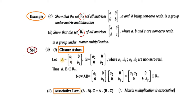So, closure property humnye check kerna hai. Matrix A aur B hamare paas R2 ke dono members hai, aur diagonal ke A1, B1, A2, B2, yeh saare elements non-zero hai. Dono ka product: if we simply find the value of A times B, it is again a diagonal matrix. So this diagonal matrix belongs to R2. Iska matlab yeh hua ke agar humnye matrix A aur B lele, unka product bhi R2 mein hoga. So R2 is closed under matrix multiplication.